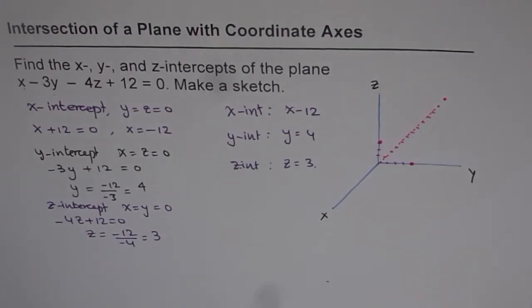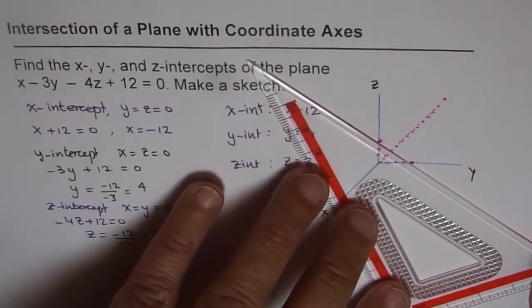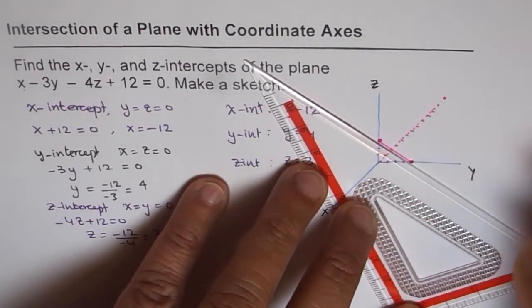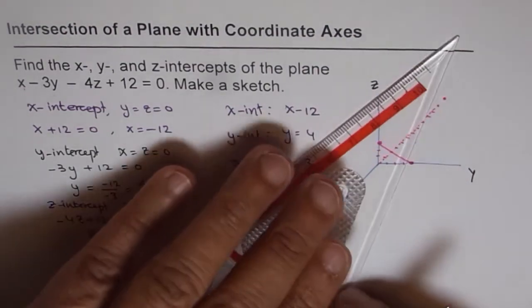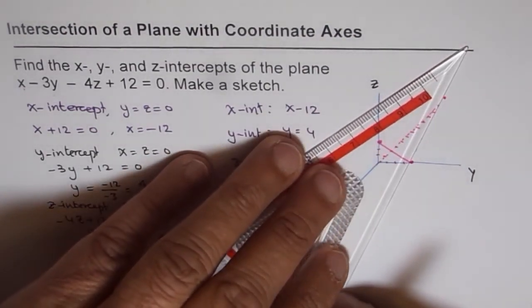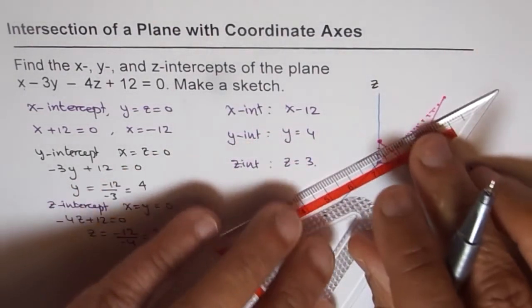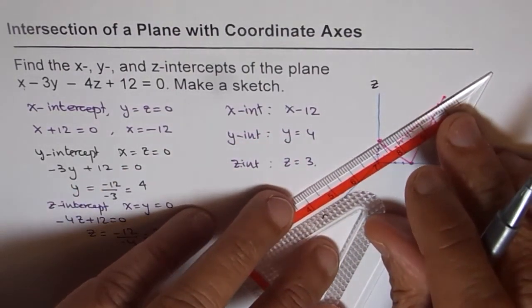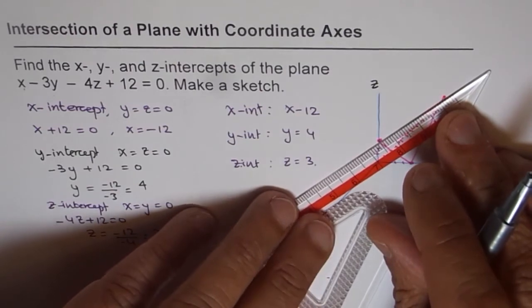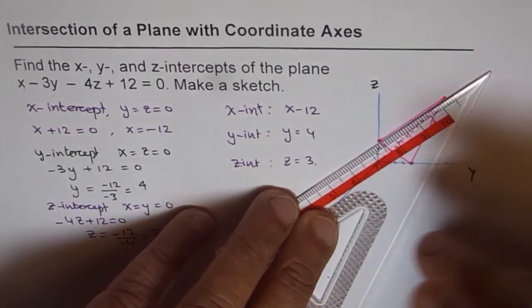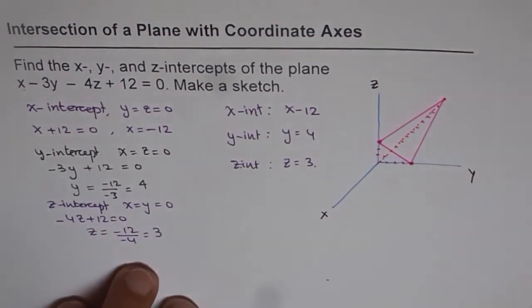So if we join these points, we get our plane representation. So let me join them. And we have this, and then we'll join this with the x-intercept. So it will kind of look like a triangle shown here. Now, this triangle actually represents our plane. Now, a plane extends infinitely on all sides. So to visualize it, it is kind of like this.